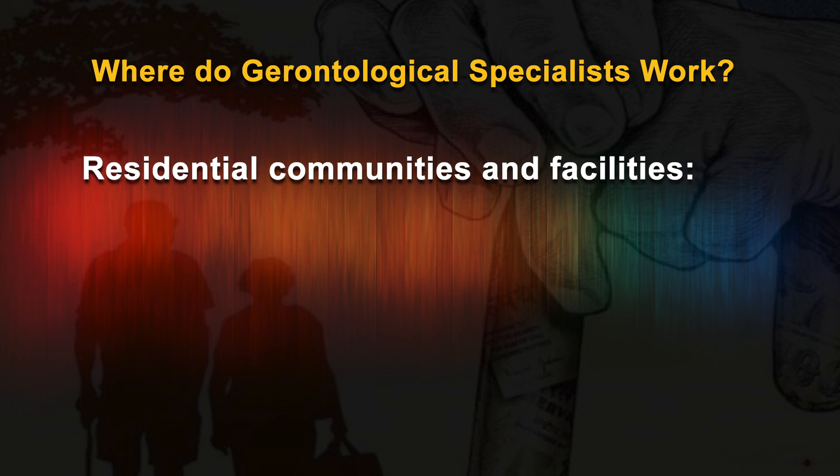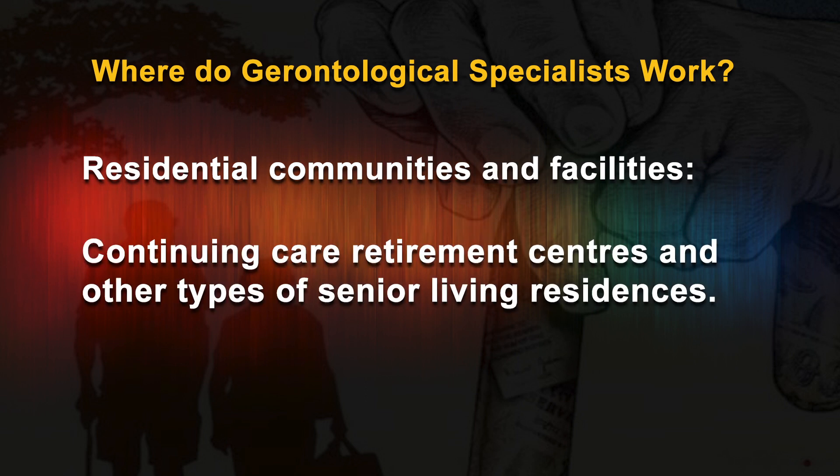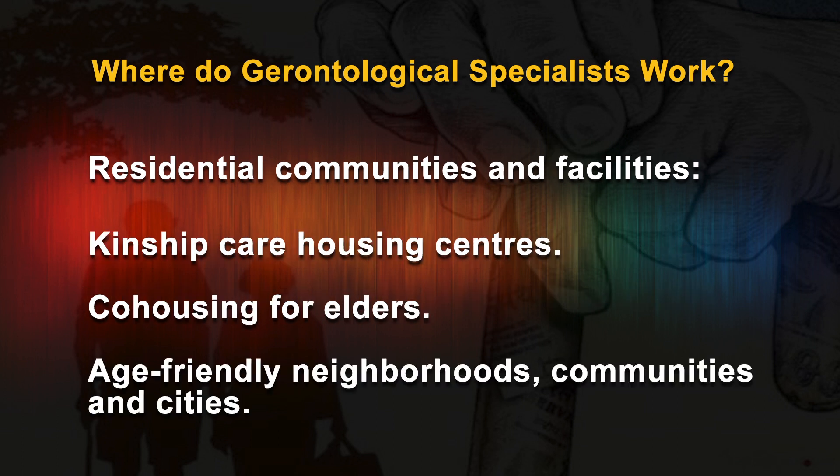Residential communities and facilities include retirement communities — including continuing care retirement centers and other types of senior living residences — kinship care housing centers, co-housing for elders, age-friendly neighborhoods, communities and cities.